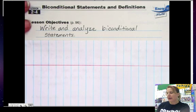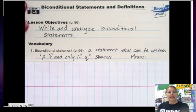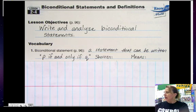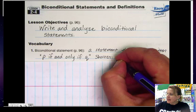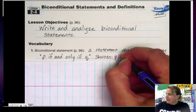First, some vocabulary. A biconditional statement is a statement that can be written as P if and only if Q. If you want to shorten this, you could write it this way instead: P-I-F-F-Q,